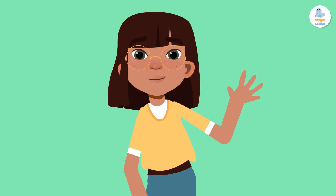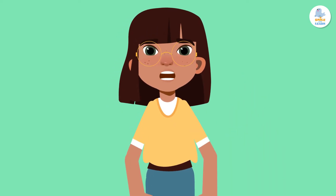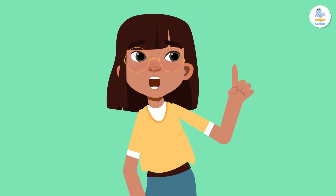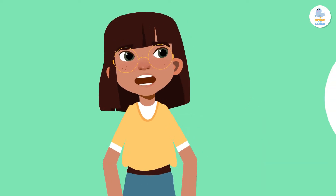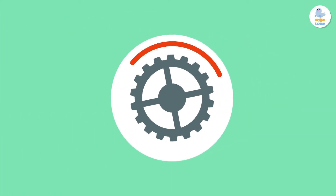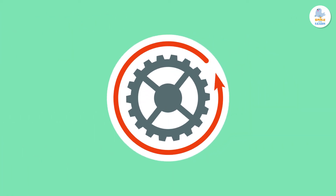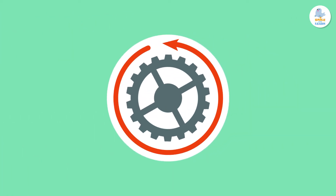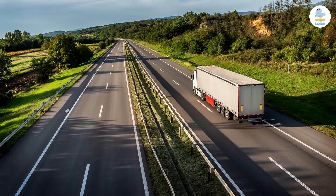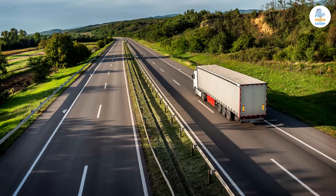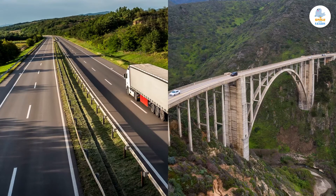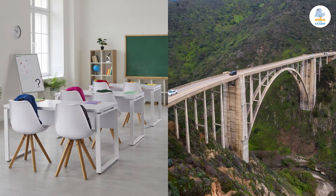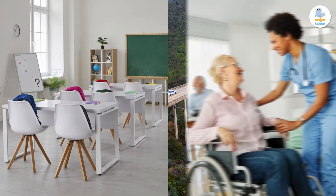Infrastructure is the facilities needed to do a specific activity that helps society function better. An example of infrastructure can be a road or bridge, but also a school or a hospital.